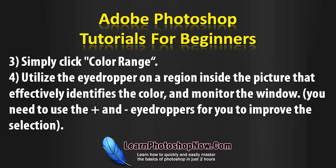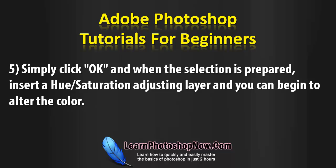Use the eyedropper on a region inside the picture that effectively identifies the colour, and monitor the window. You can use the plus and minus eyedroppers to improve the selection. Simply click OK, and when the selection is prepared, insert a Hue Saturation Adjustment layer, and you can begin to alter the colour.